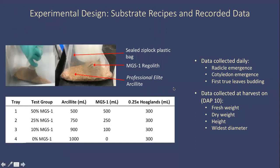In our experiment, we wanted to determine how low concentrations of Mars Global Simulant could affect crops. We tested three different concentrations of regolith relative to an inert perlite substrate base: 10%, 25%, and 50% Mars Global Simulant 1 relative to the perlite.